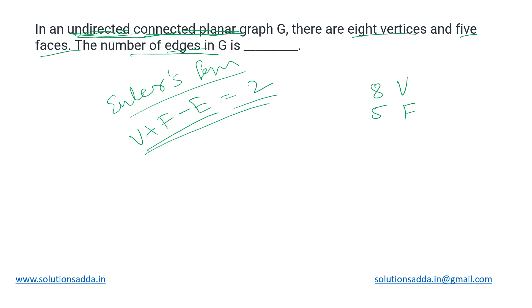So for this graph, we simply get in place of V, we substitute 8. Then 5 faces, edges have to be found out equal to 2. So we get 13 minus E equal to 2, which means this graph would have 11 edges.